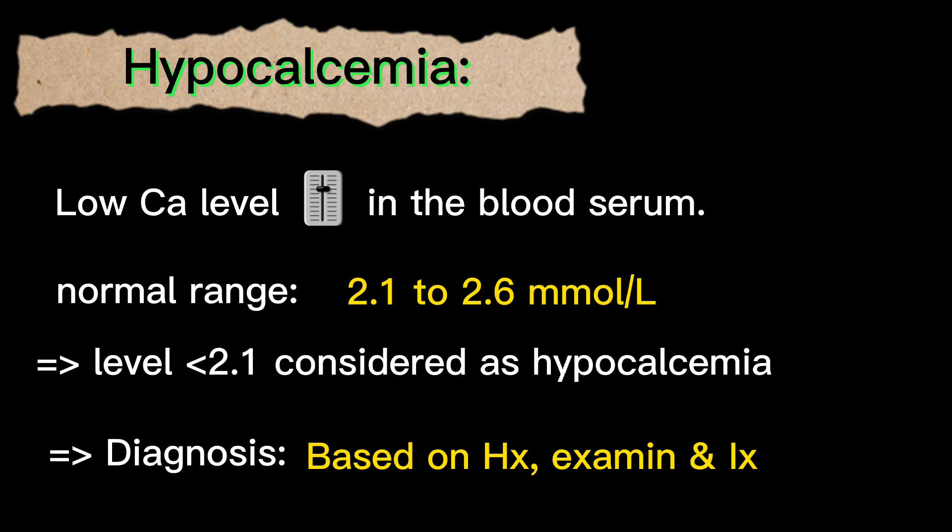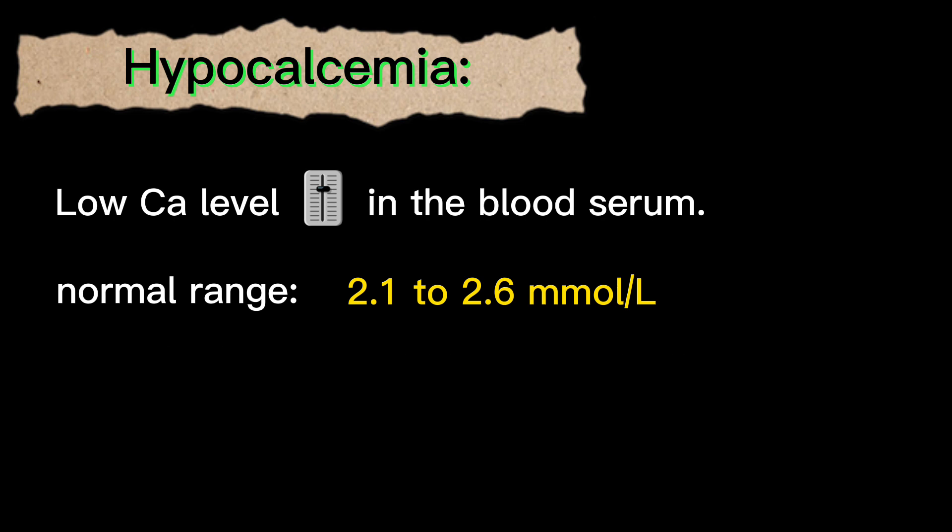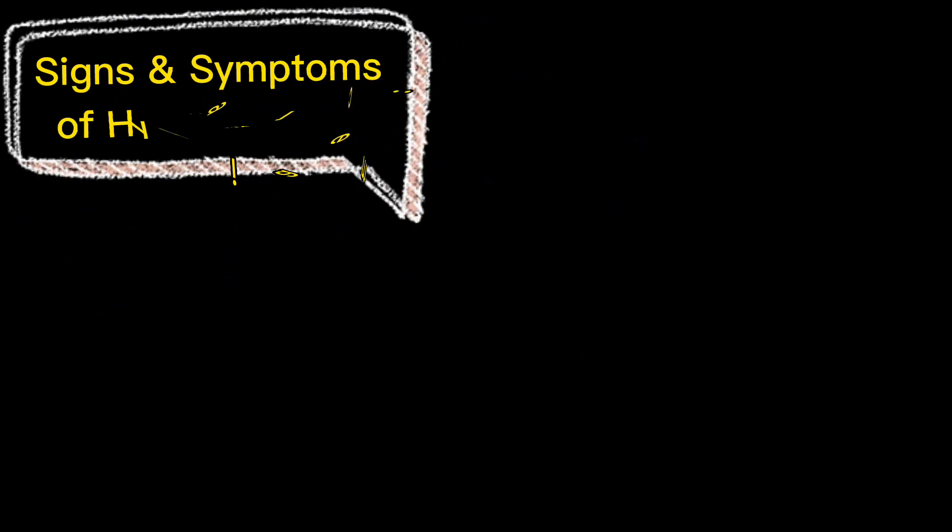Hypocalcemia can be diagnosed by three things: one is by history, the second is by examination, and the third is by investigation. In the history, the patient will give a history of symptoms. On examination, you may find signs of tetany. On investigation, you will find the calcium level in the serum.